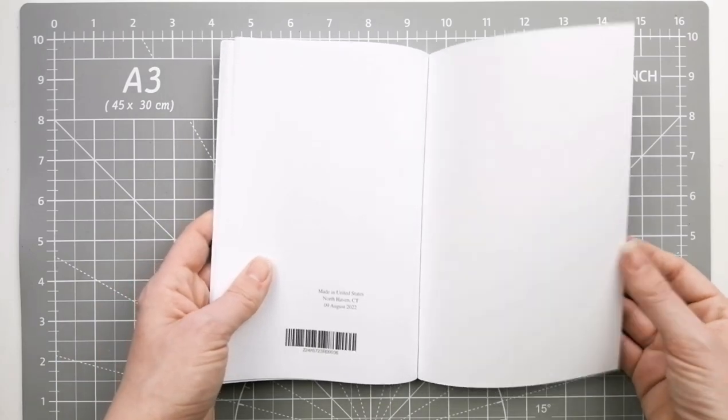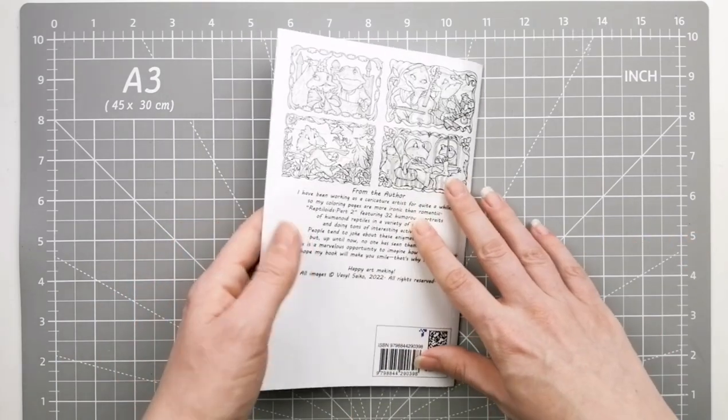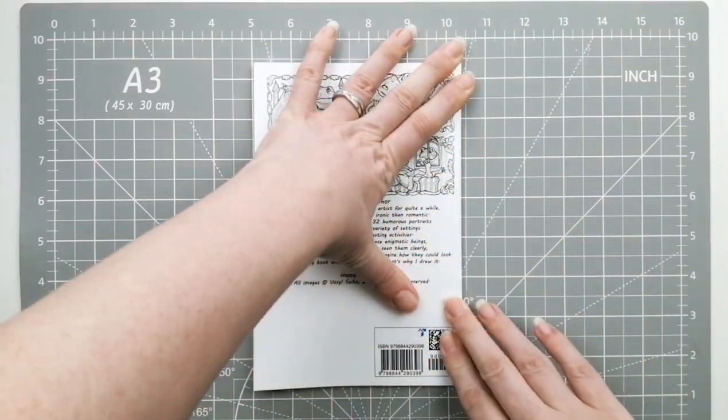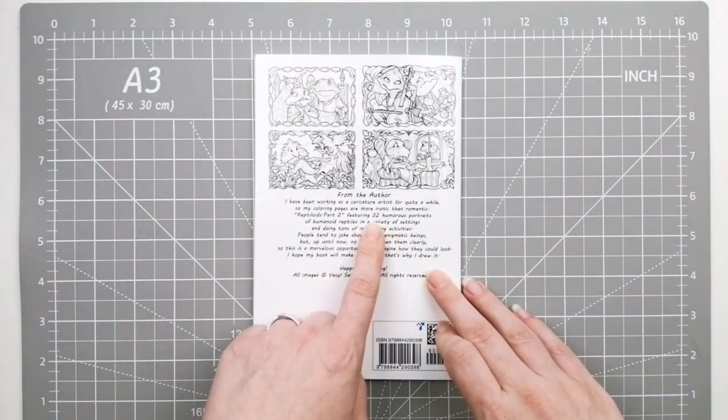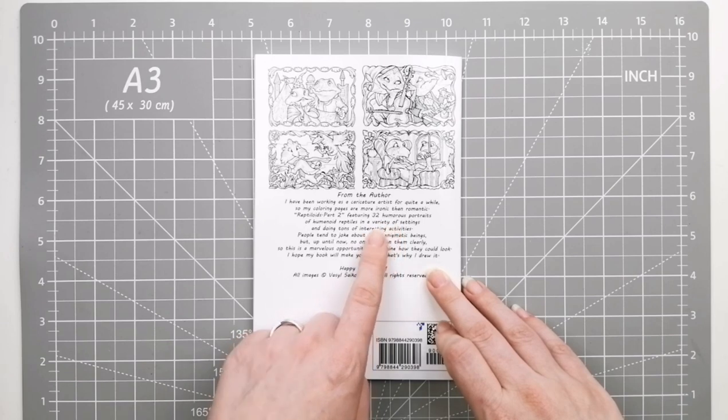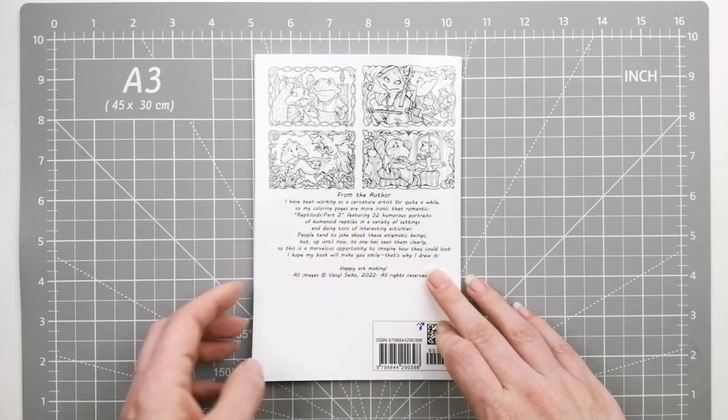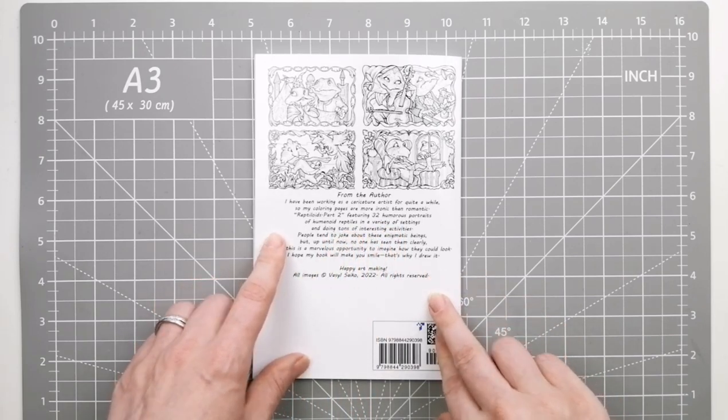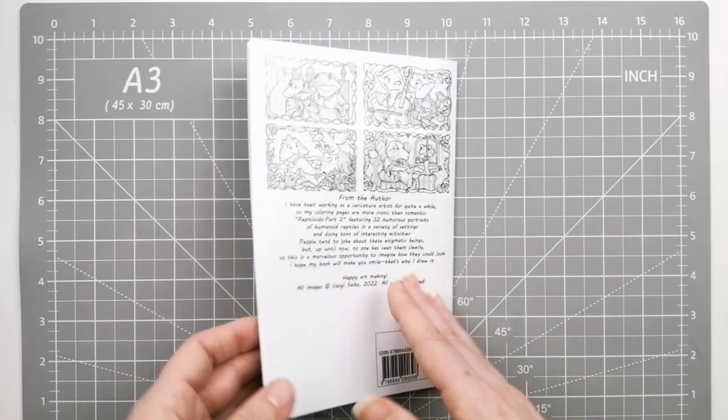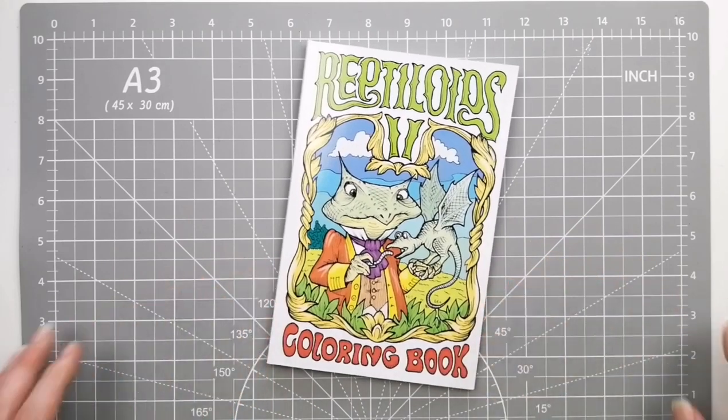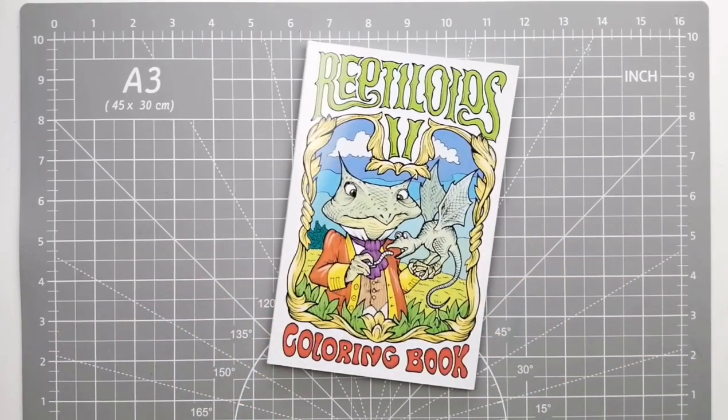One Amazon print book. Mine came from the United States because I couldn't wait for it to be available. And it just says that he features 32 humorous portraits of human reptiloids in a variety of settings and doing tons of interesting activities.